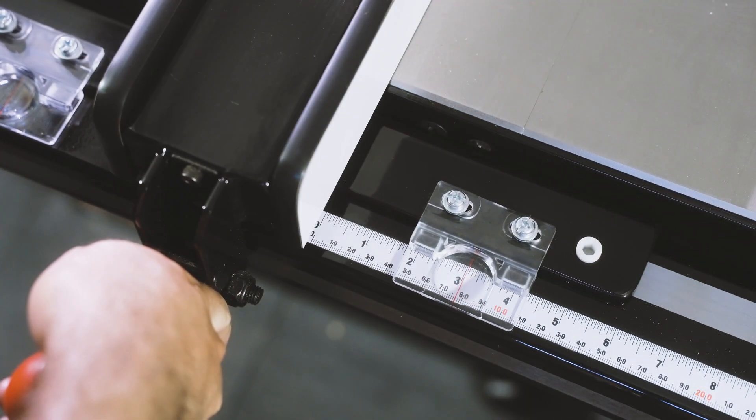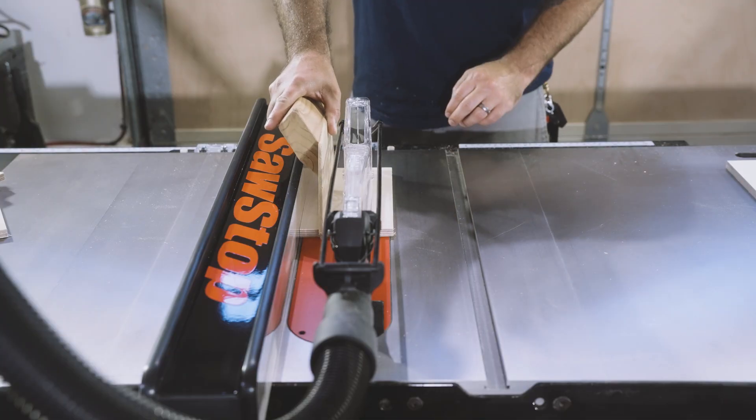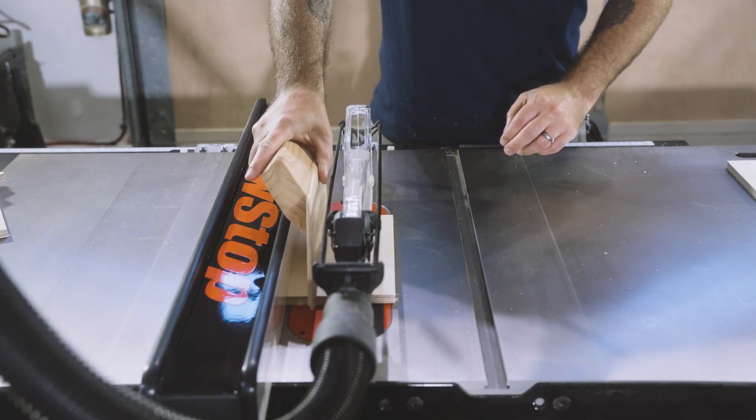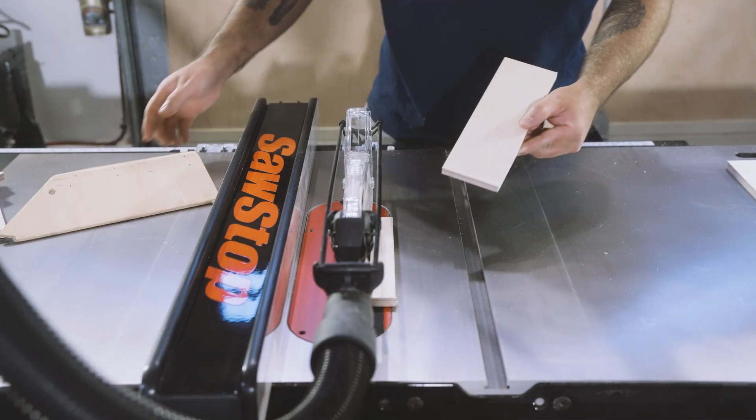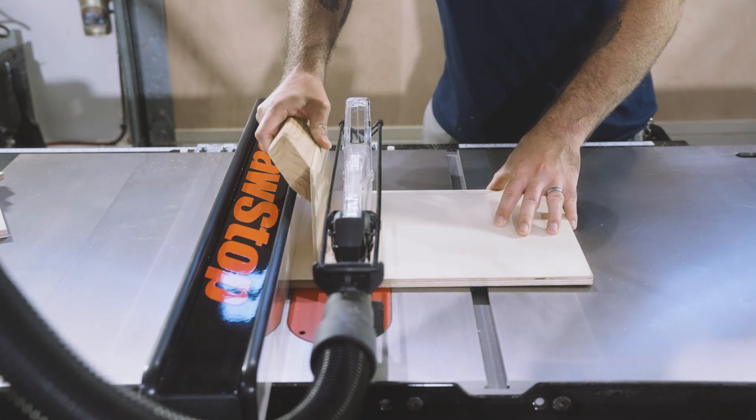After that we'll set the fence to 3 inches and cut one strip from the smaller remaining work piece, and cut another 3 inch strip off the end of the larger remaining work piece.